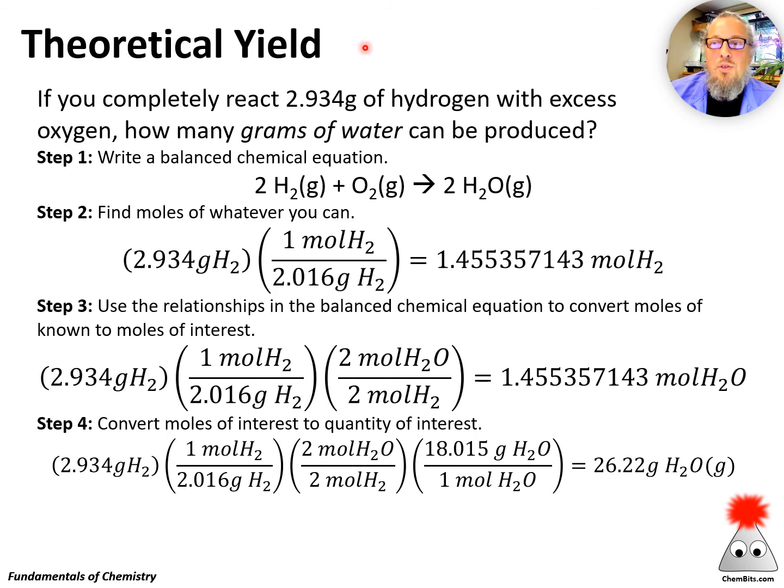One type of problem is a theoretical yield. How much material can I make if everything goes perfectly? So if you completely react 2.934 grams of hydrogen with excess oxygen, how many grams of water can be produced? What's the theoretical yield of water? Step one, write a balanced chemical equation. We've seen this one before, 2 H2(g) + O2(g) → 2 H2O(g).